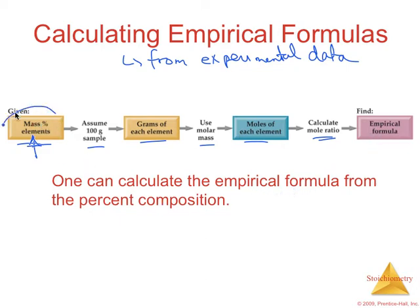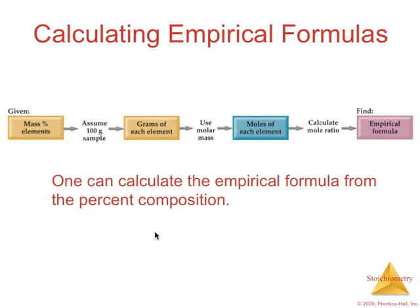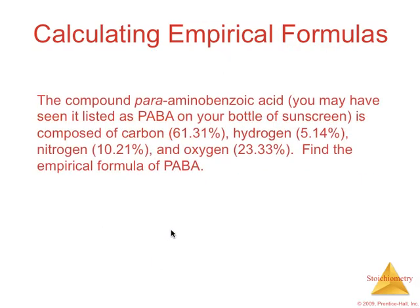This information here, percent mass of each element, is known as the percent composition. And you'll be asked to calculate percent compositions for different compounds as well. And it basically is finding the mass percent of each element present in that compound. So if we look at an example,